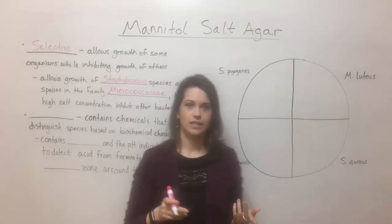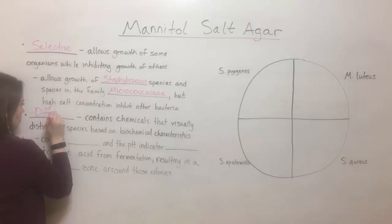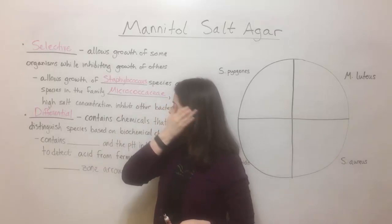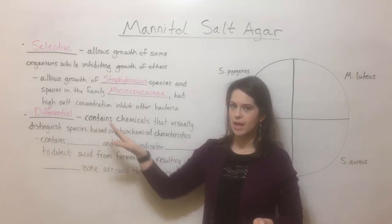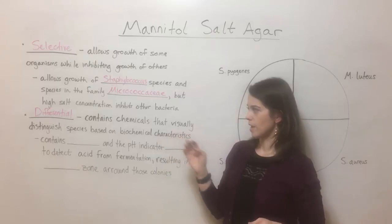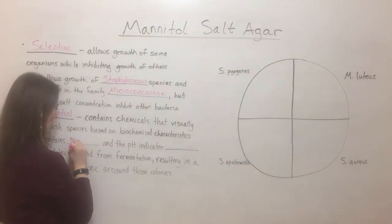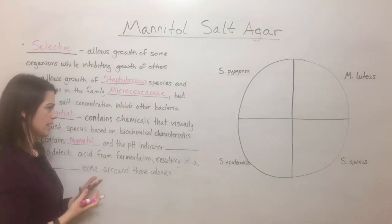Mannitol salt agar has another interesting characteristic. In addition to being selective, it is considered a differential medium. Differential media means that it contains chemicals that visually distinguish species based on their biochemical characteristics, so you can see with your eyes that some colonies are a different species than another. In the case of mannitol salt agar specifically, it is differential because it contains mannitol, which is a sugar alcohol — basically a kind of carbohydrate — and it contains the pH indicator phenol red.